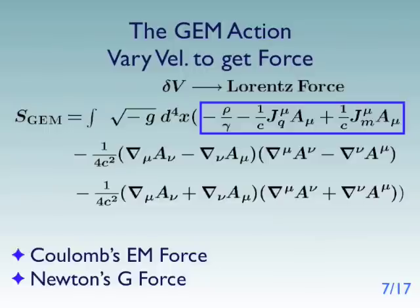All right. Now what are we going to do with this action? We're going to do exactly as we did before. We're going to vary the 4 velocity in order to get a Lorentz force. And so we'll get Coulomb's EM force and Newton's gravitational force law out of this sort of approach. We now understand why like charges repel for EM but attract for Newton's gravitational force law. It has to do with the difference in the signs of the coupling term.